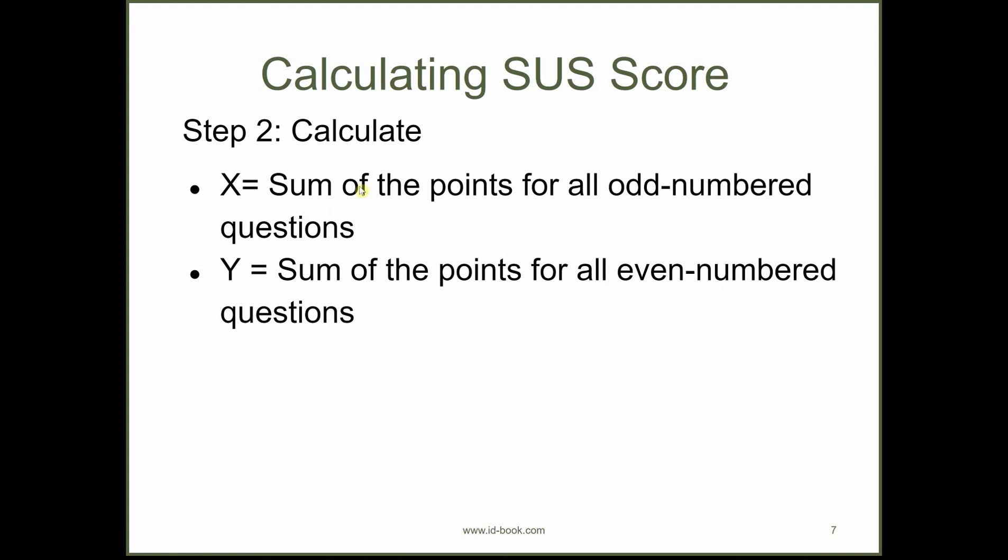The next step is to sum all the odd number questions, the points for all the odd number questions, and also sum the points for all the even number questions separately. So you should end up with two sums at this stage.